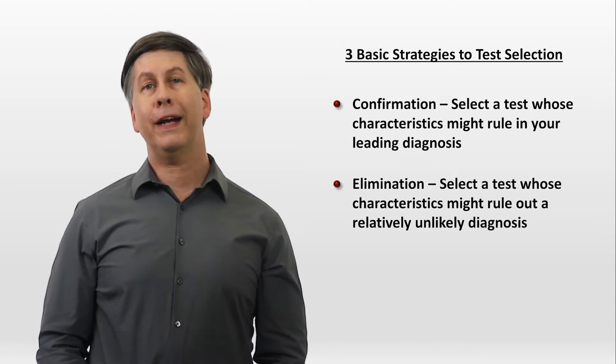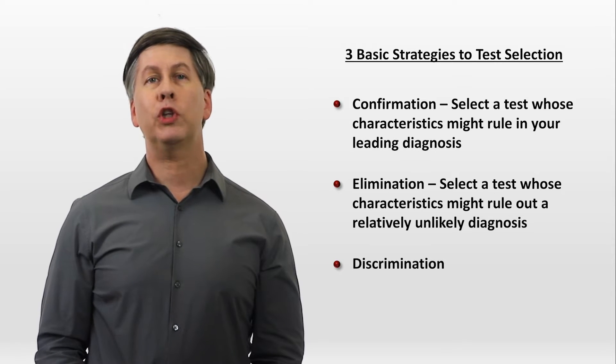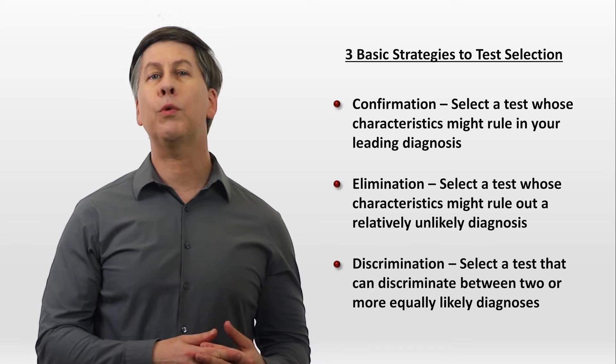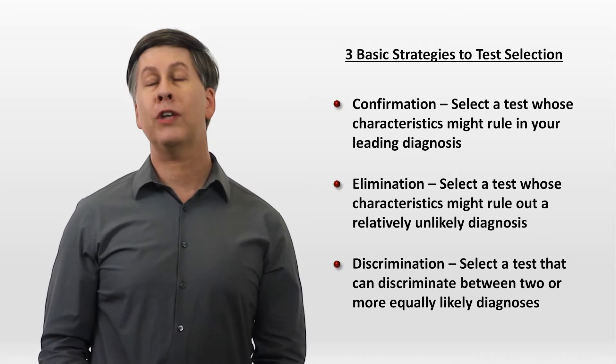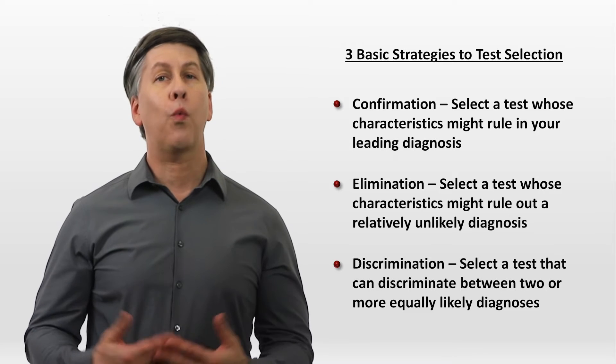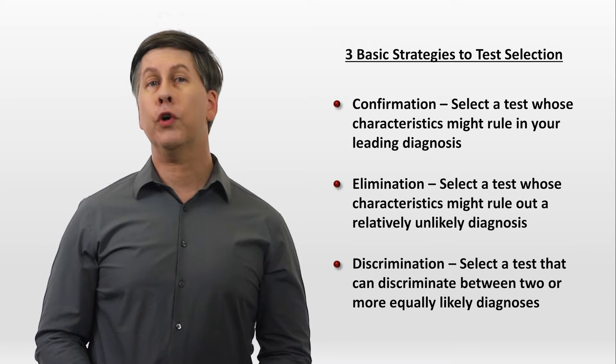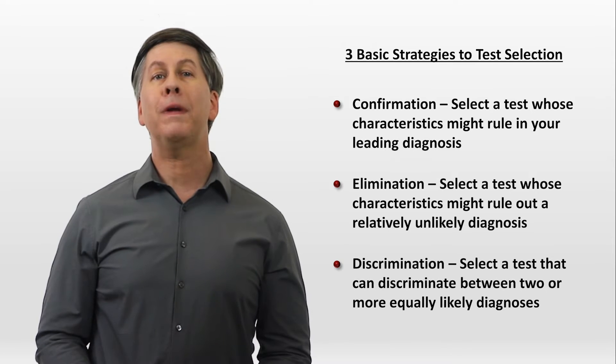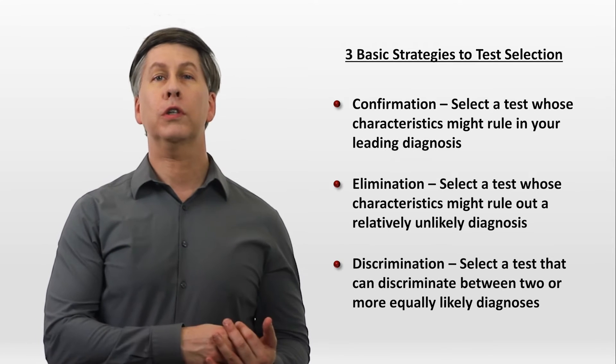The third test strategy is discrimination, in which a test is selected for its ability to discriminate between two or more equally likely diagnoses. For example, performing a lymph node biopsy in a person with fever, weight loss, and a large cervical node, in whom the major diagnostic considerations might be lymphoma versus tuberculosis lymphadenitis.